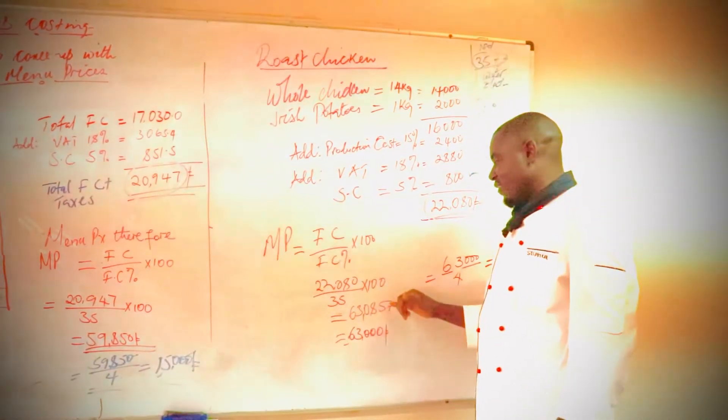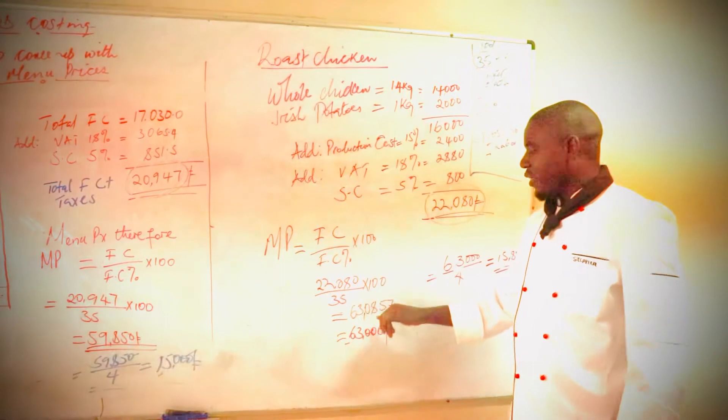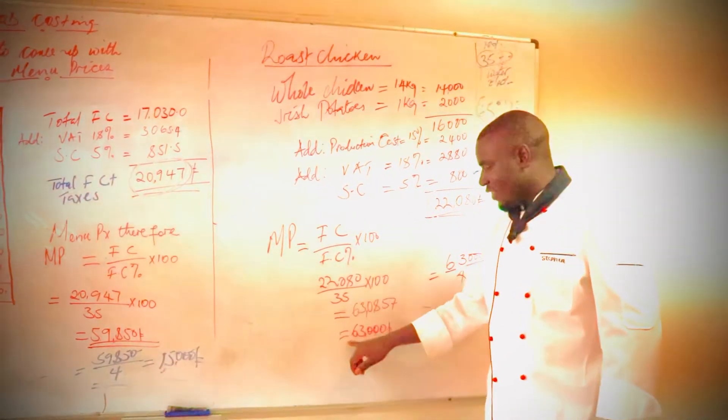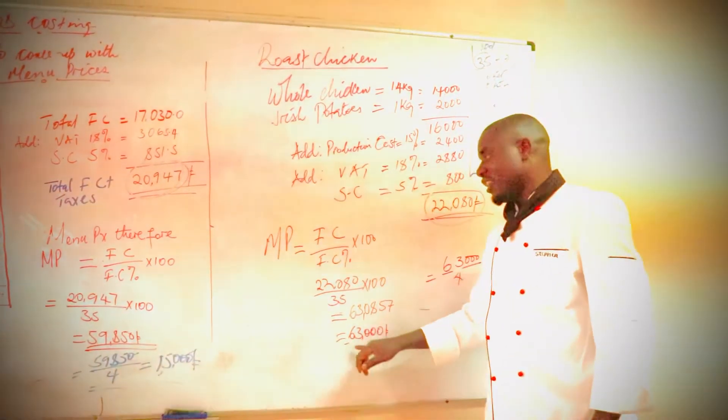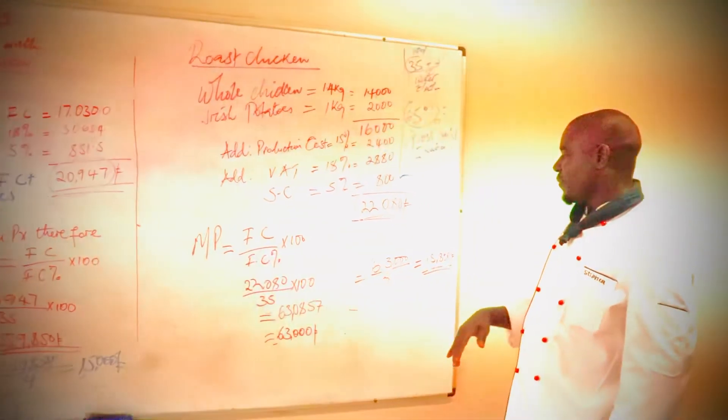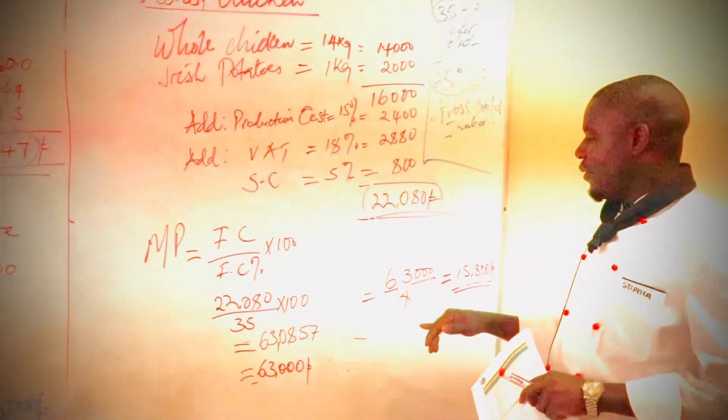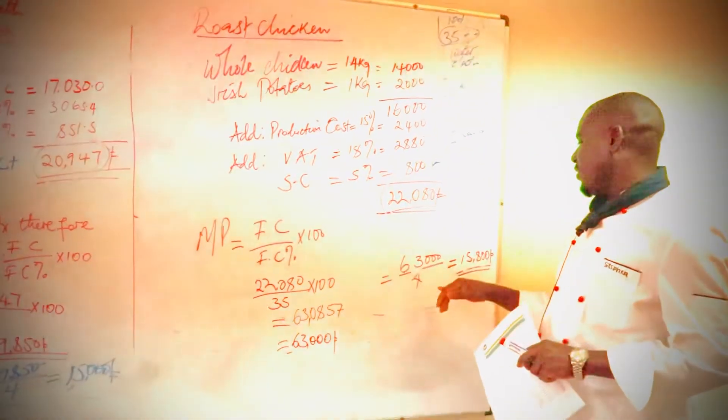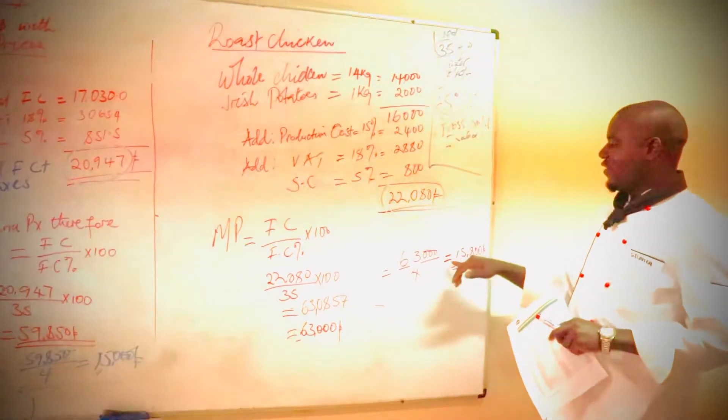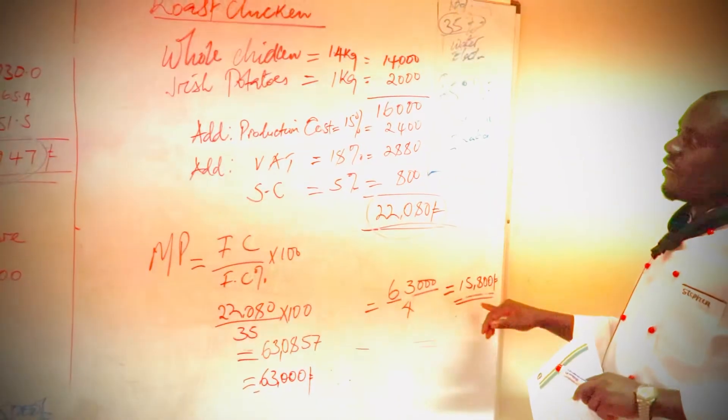So now it gives us 63,857 shillings, so we round it back to 63,000 shillings. We avoid the decimals, so if we are cutting these to quarters, we divide by 4 again, which is giving us 15,800 shillings.